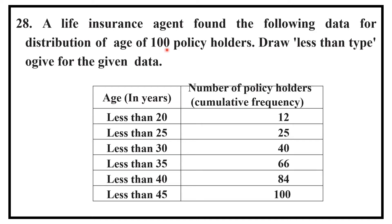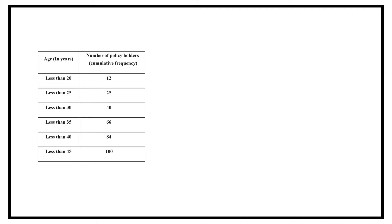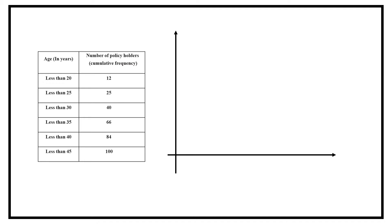In the question, data is given and we have to draw a less than type of Ogive. Let us have X and Y-axes, where along the X-axis the upper limit is taken, and along the Y-axis cumulative frequency is taken.